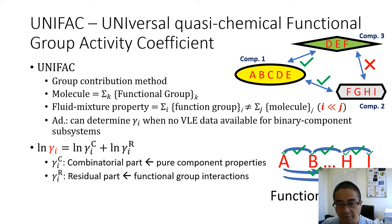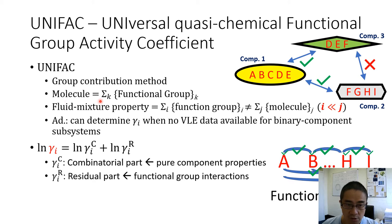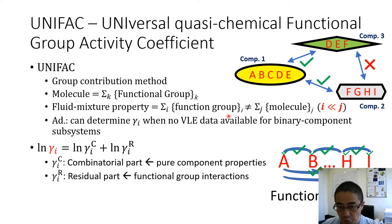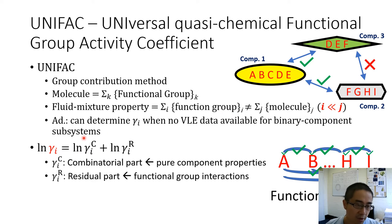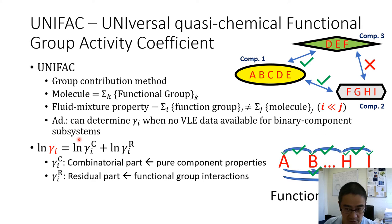In this work, the activity coefficient is determined by UNIFAC — the Universal Quasi-Chemical Functional Group Activity Coefficient model. UNIFAC is a group contribution method: a molecule is seen as an aggregate of functional groups, so the property of a liquid mixture is the summation of contributions from all functional groups and their interactions. A key advantage of UNIFAC is it can determine gamma_i even when no VLE data is available for any binary component subsystems.